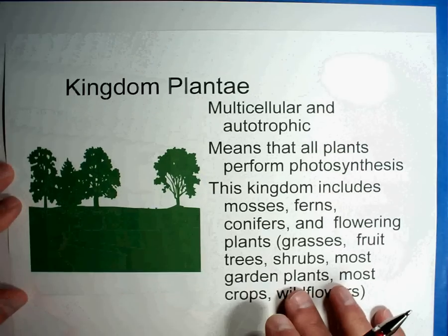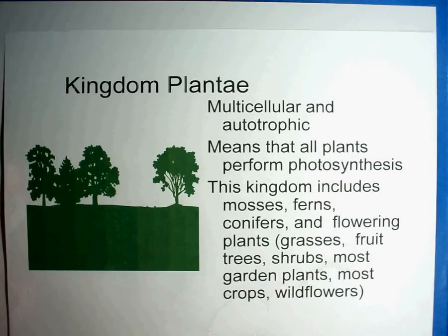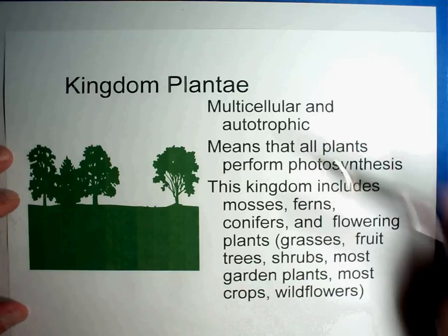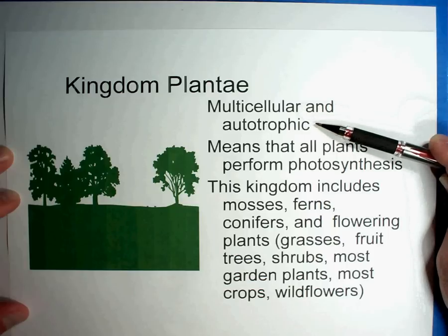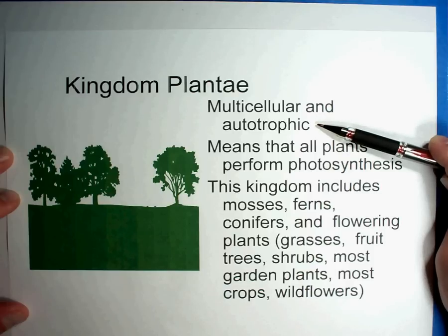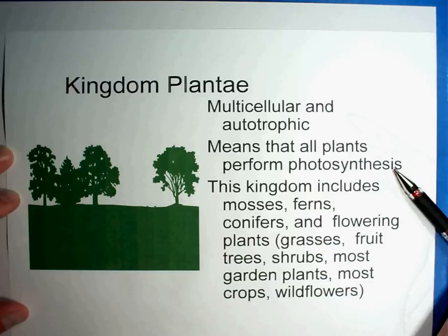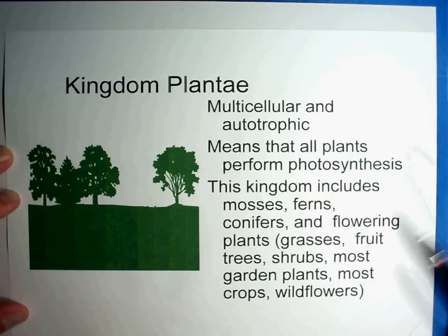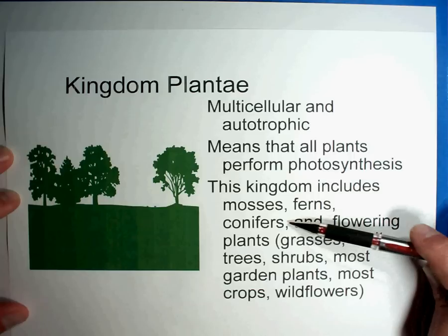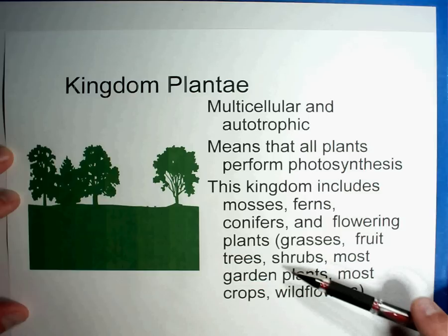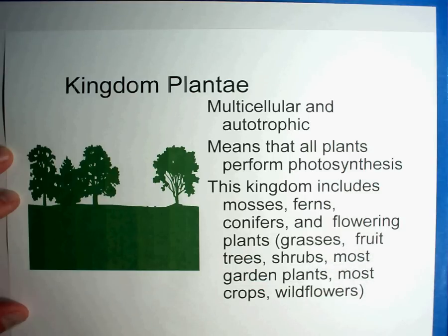Next is the plant kingdom, one of the largest. Plants are also multicellular with lots and lots of cells. They are autotrophic — they make their own food using chlorophyll in their chloroplasts, which is why they're green. They make their own food using sunlight through photosynthesis. Everything from mosses to ferns, conifers like pine trees and Christmas trees, flowering plants, grasses, and fruit trees all fit into the plant kingdom.